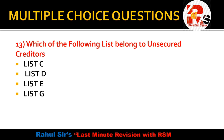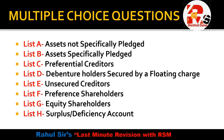Question 13: Which of the following list do unsecured creditors belong to in winding up? Unsecured creditors come under List E. You should go through all these lists as questions can appear from this topic in the exam.